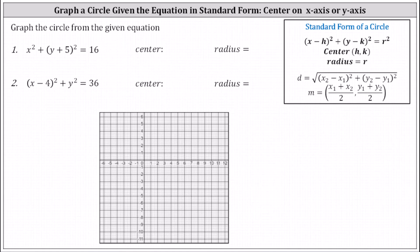Graph the circle from the given equation. For number one, we have x squared plus the square of y plus five equals 16. Recall the standard form for the equation of a circle is the square of x minus h plus the square of y minus k equals r squared, where the center is the point h comma k, and the radius equals r.